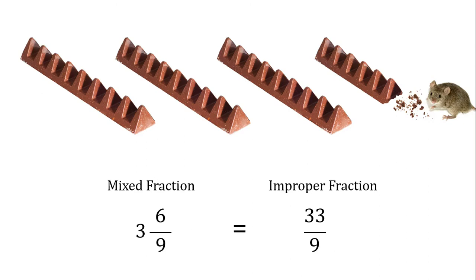Is there anything you noticed that is the same about the mixed fractions and the improper fractions we've been looking at? One thing I noticed is that they will still have the same denominator. The denominator tells you how many pieces are there in a whole, and regardless of how you're showing the fraction, there are still the same number of pieces in a whole. The only difference is, with the improper fraction, we take all the pieces and stick them on the top. Whereas with the mixed fraction, we take all those overflow pieces, write it as a whole number, and then only write the parts.